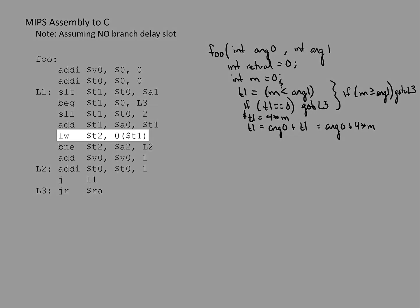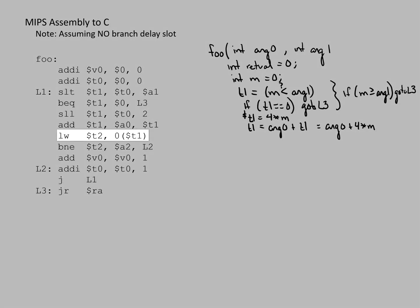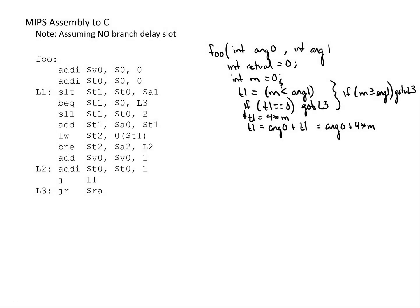The next instruction is a load word, loading the value from the address in T1 into register T2. So T2 equals the value at memory address T1. Since T1 is argument 0 plus an offset of 4 times M, and assuming argument 0 points to an array of integers (4-byte values), this is equivalent to accessing the array at index M — we're accessing the array at the address given by argument 0 at index M.